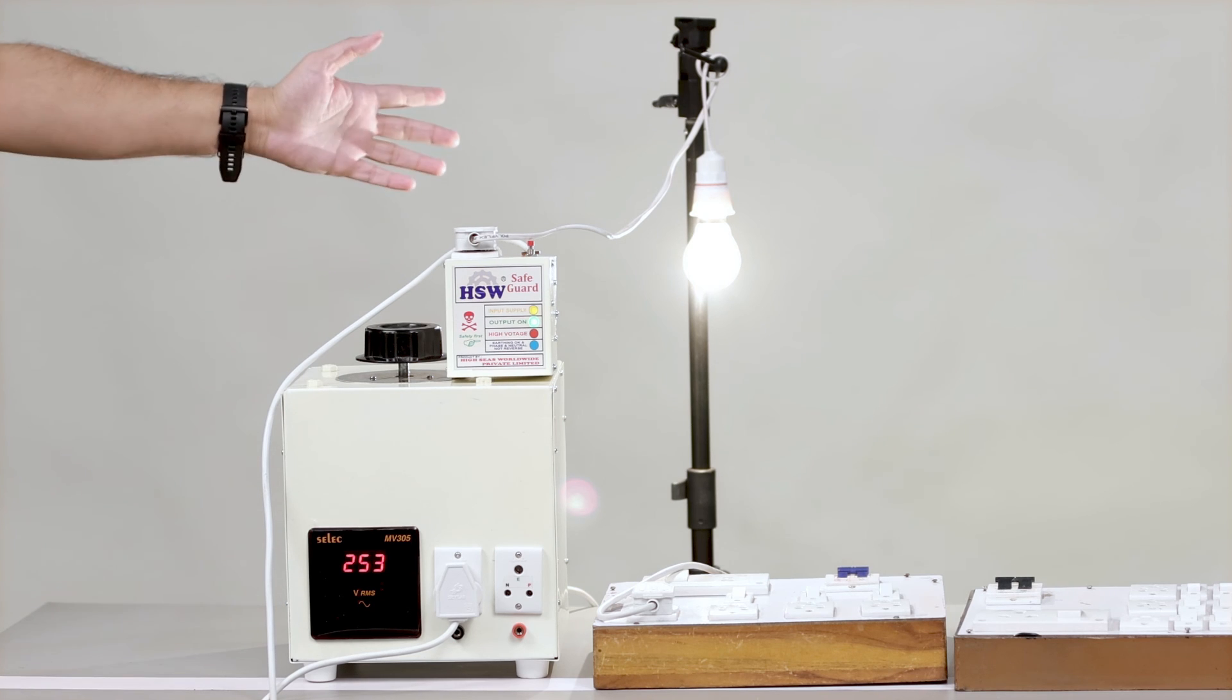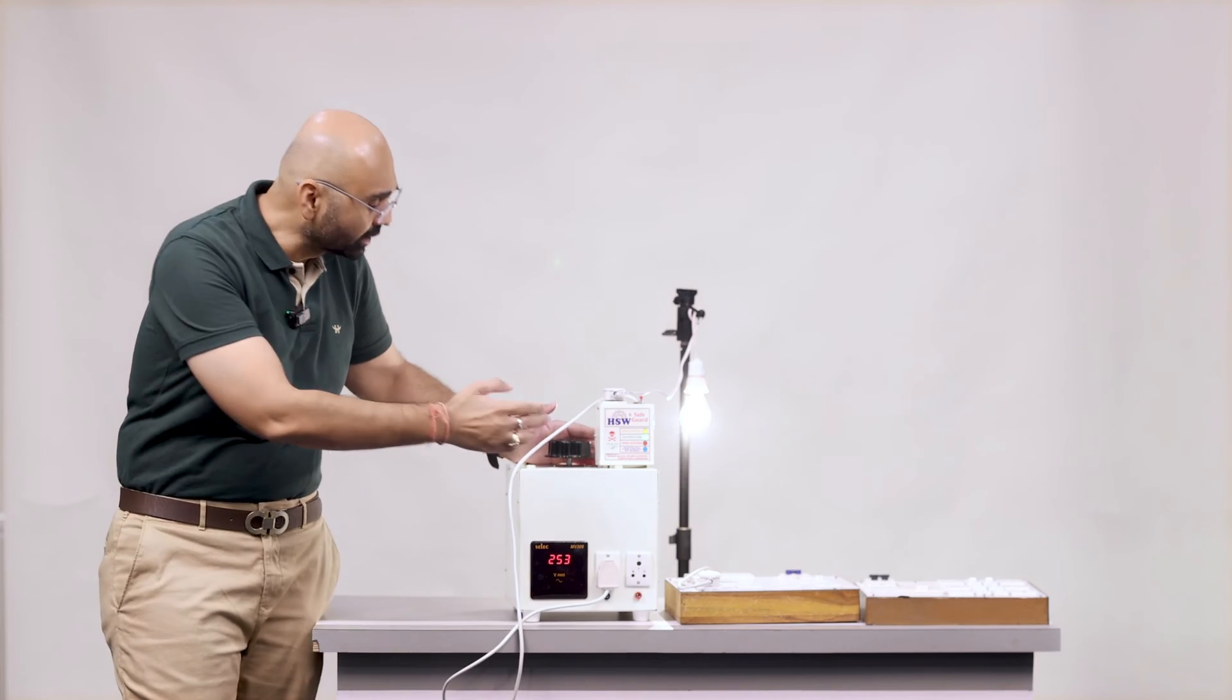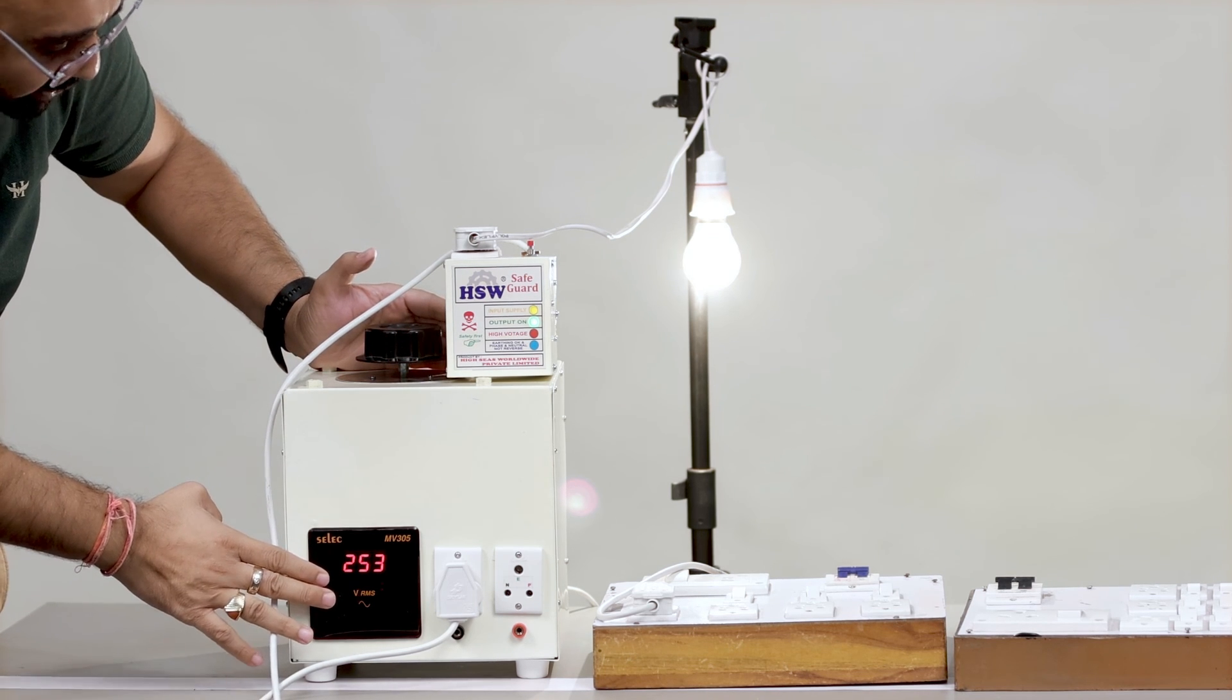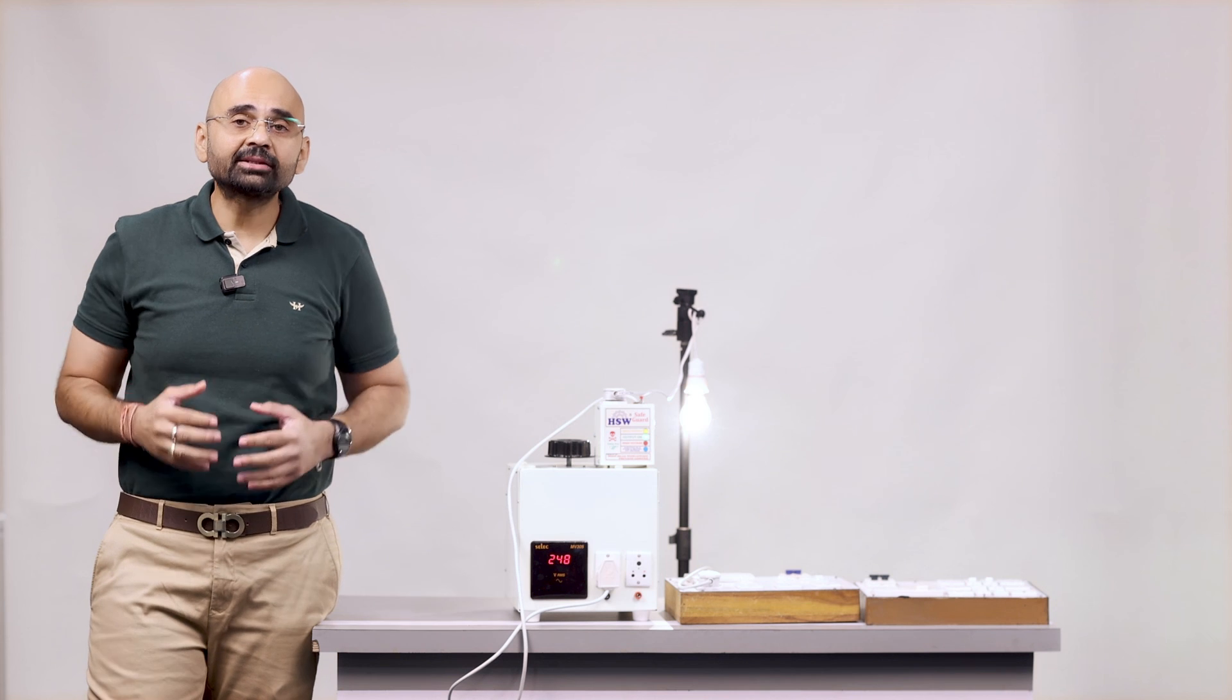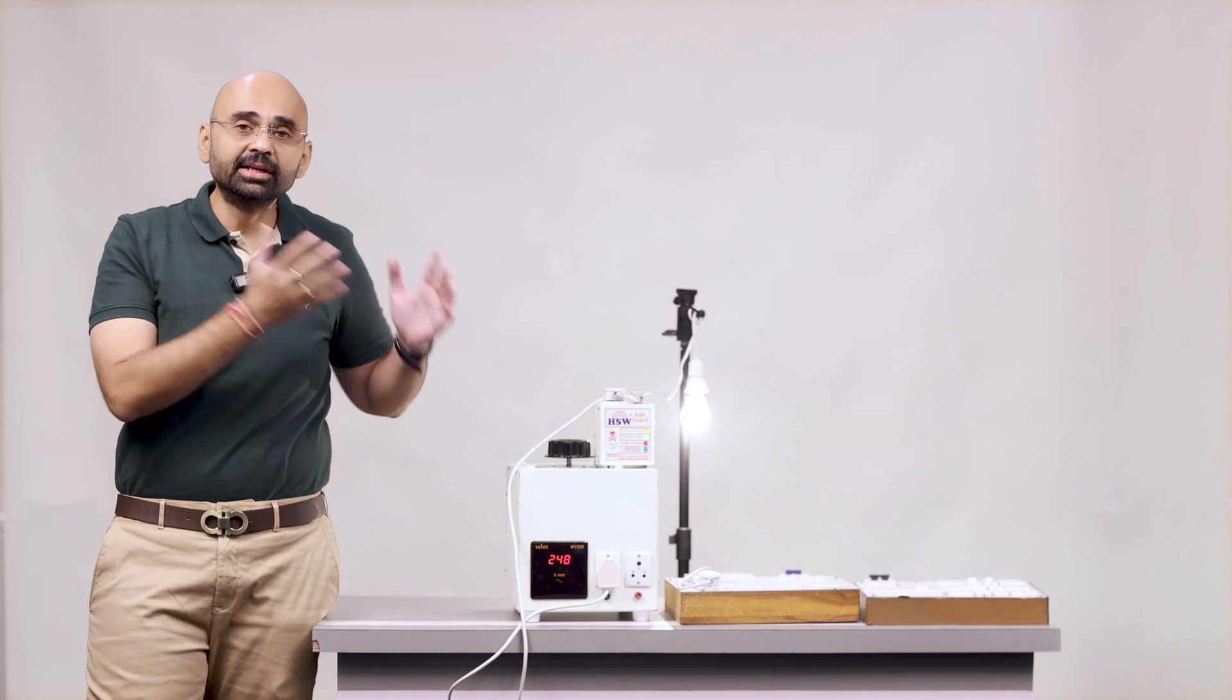Now guys you can see that electric bulb is on. So now the power supply is regular 250 253 and output is on. So that's how exactly this device works.